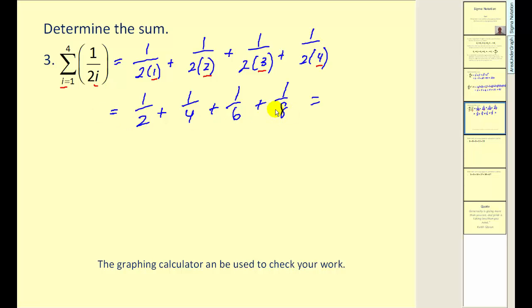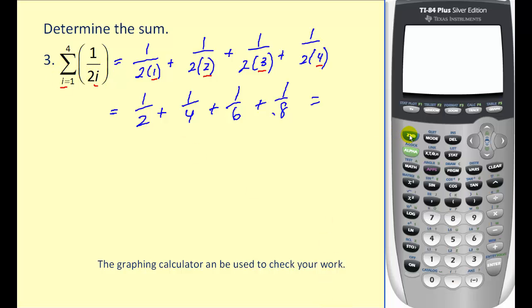Now this would be a lot of work to do by hand. Let me show you on the graphing calculator how you can also evaluate something written in sigma notation. The way we do this is we hit second stat for our list options, go over to math, so right arrow twice, select option five for sum.